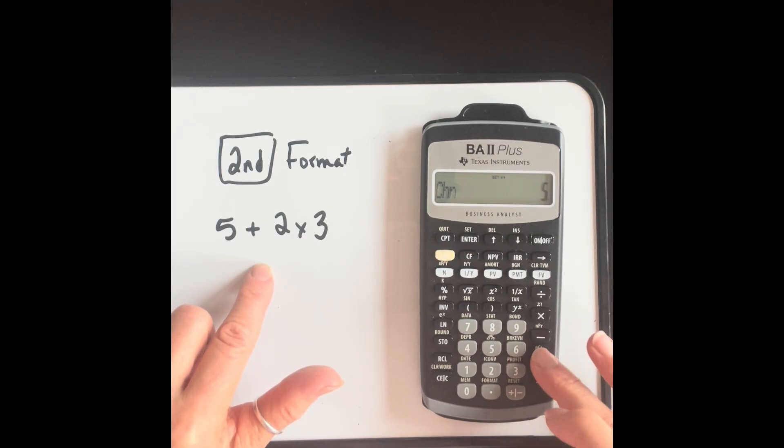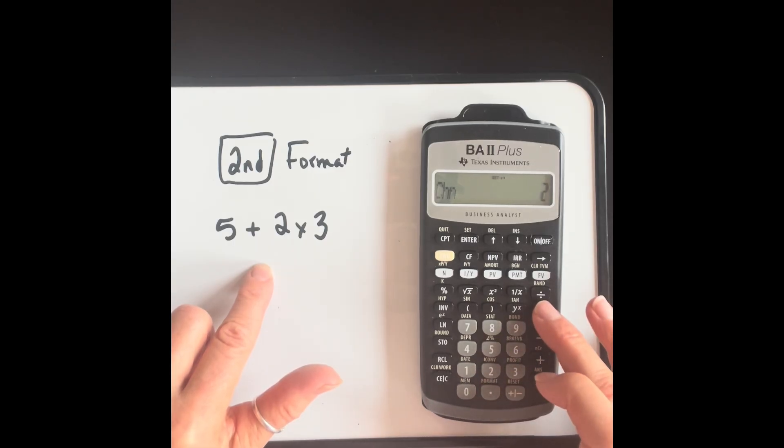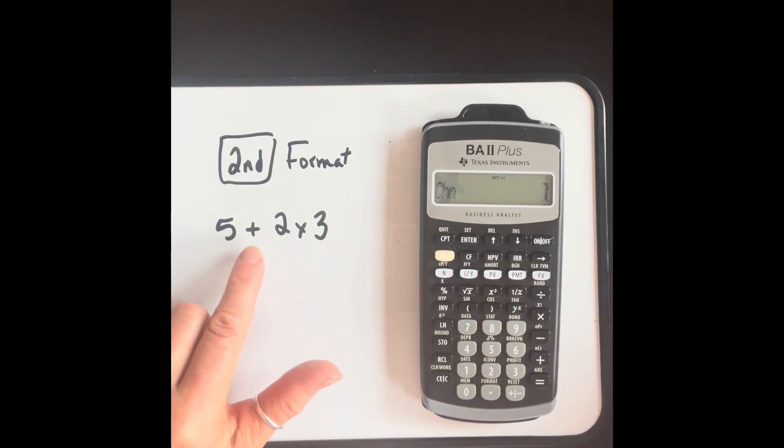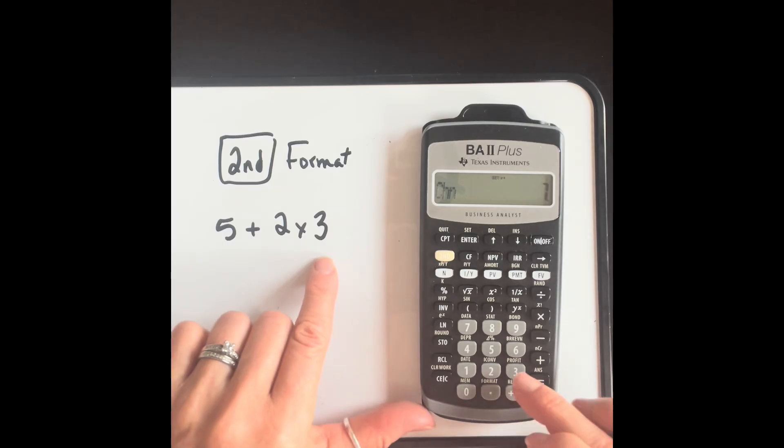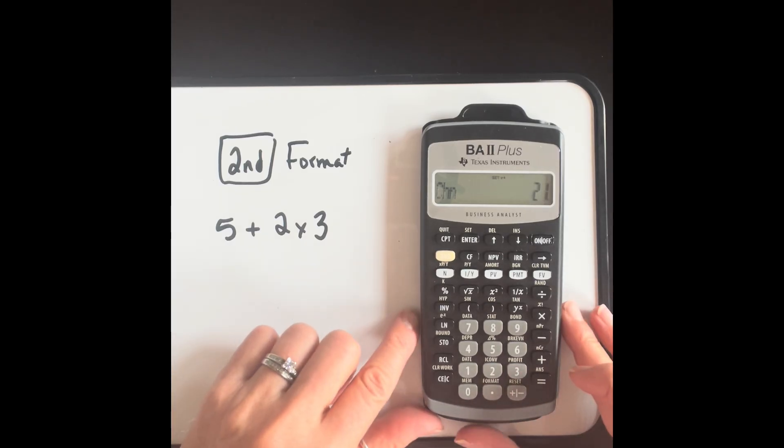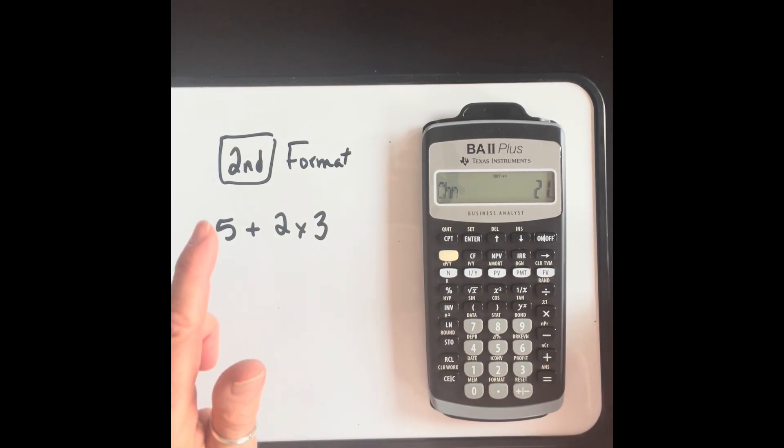So it's going to do the calculations in exactly the order that you type it, even though it's incorrect. So five plus two. And then when you press times, it does the five plus two, gives you seven, and then times three, and then equals. However, this is incorrect. Looking at that expression, it should be two times three, which is six, and then plus five, to get 11.